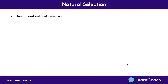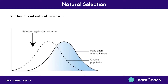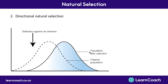The second type is directional natural selection. Starting with the same variation, over time it selects against one extreme. For example, if being taller is better in a desert environment because you look bigger and more threatening so people don't attack you, then smaller individuals die off and on average the population gets taller and taller. This is selection against an extreme — natural selection for one extreme phenotype at the expense of the other.